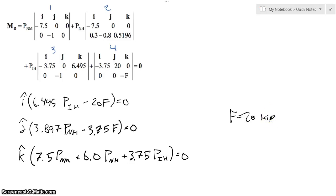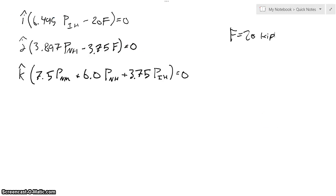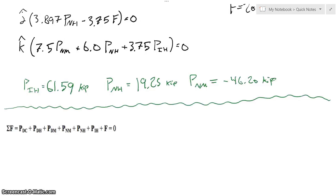We want to go ahead and remember that f is given to be 20 kips. And then we can go ahead and solve. And again, what these will look like, you're welcome to check them if you like, but if you'd like to take my word for it, these will solve to be pih is equal to about 62 kips, pnh equal to about 19, and pnn is negative 46.2 kips. So, great, we've solved for three of our forces. We're actually almost there.